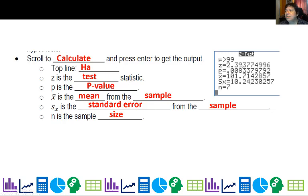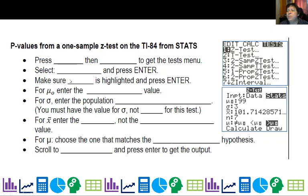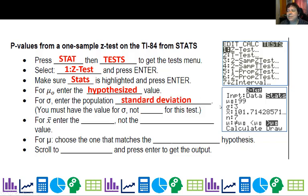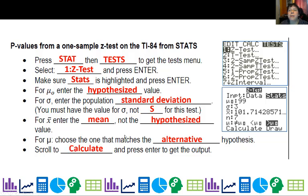This is how you run a z-test for a list of data. But you can also run a z-test for statistics when you don't have a list of data but are given the measurements. Press STAT and TESTS just like before and go to 1-z-test. Instead of data, make sure STATS is highlighted and press ENTER. For mu-naught, that's still the hypothesized value. Sigma is still the population standard deviation, not s. For x-bar, put in the sample mean — not the hypothesized value. Then pick the alternate hypothesis form and scroll to CALCULATE and press ENTER to get your output.